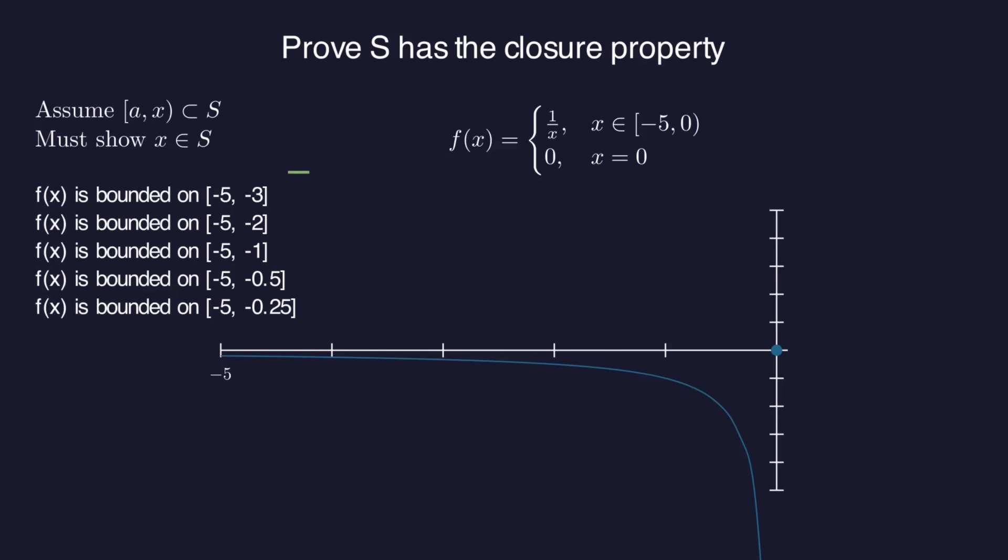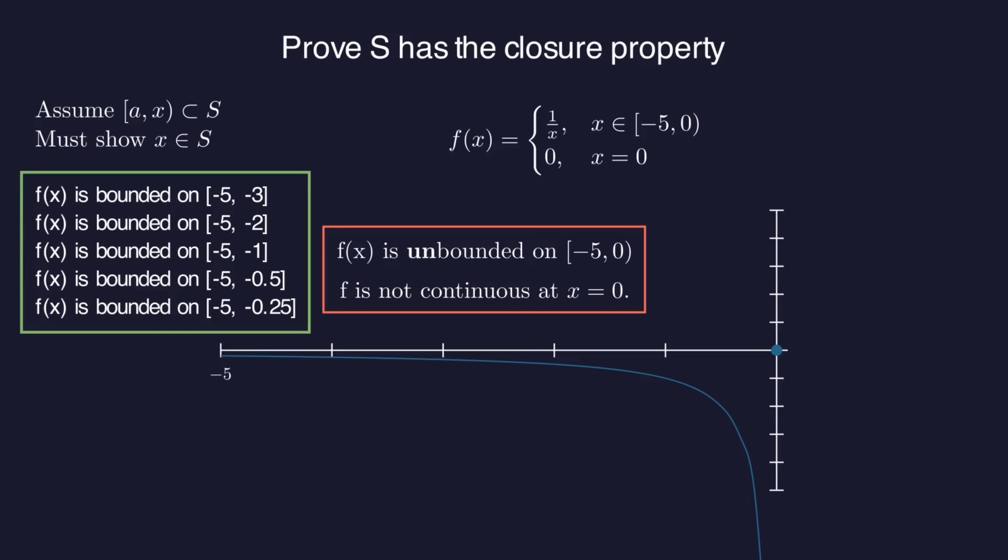This function really is bounded on all these closed intervals that don't include 0, even though it is not bounded on the half open interval from negative 5 to 0. Now, of course, this F is not continuous at X equals 0, so this gives us the hint that in our proof, we will have to use the property of continuity at the point X.